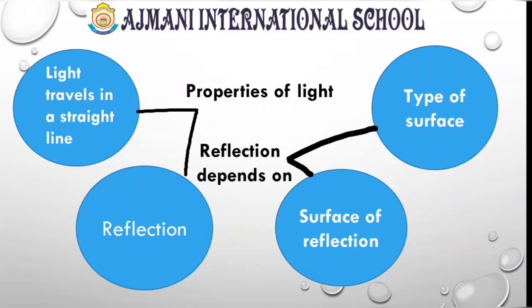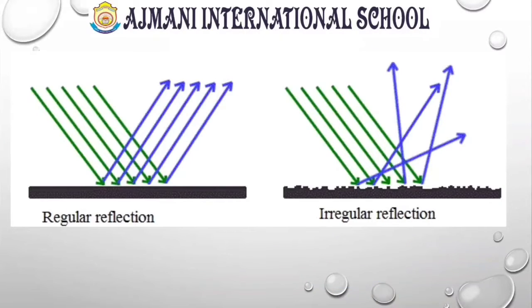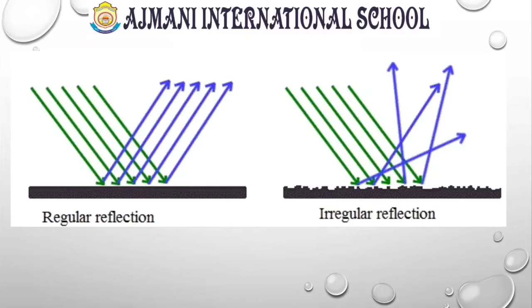All types of surfaces reflect light — that is why we can see them. When light from the sun or any source falls on an object, we are able to see the object just because of reflection from these surfaces. We refer to a smooth surface as a regular surface and a rough or wavy surface as an irregular surface. A regular surface reflects a parallel beam of light incident upon it in only one direction, and this is called regular reflection. Whereas, a parallel beam of light incident on an irregular surface is reflected in all directions — this is called irregular or diffused reflection.